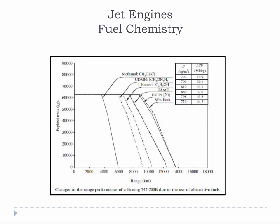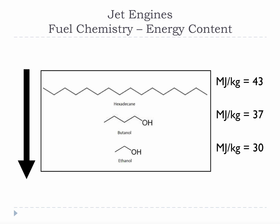It wouldn't be fair not to touch on jet engines, given their increasing role in the bioenergy field. However, jet fuel has almost nothing to do with internal combustion engine fuels. The most important thing for a jet fuel is energy content. These are the decreasing energy content values for these fuel chemicals. Notice how the chemical structure changes as the energy content decreases. Think about this trend compared to the trends you have seen for cetane and octane ratings.